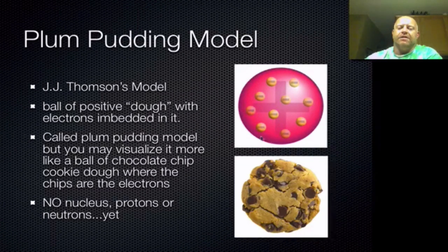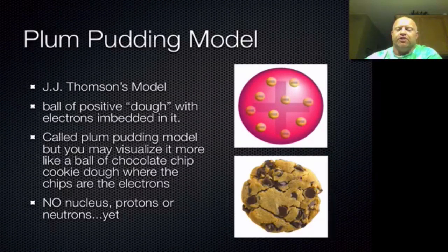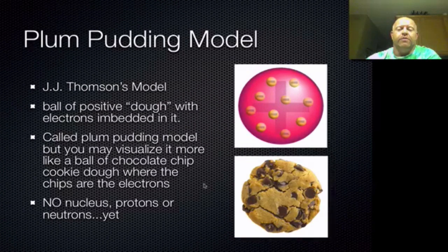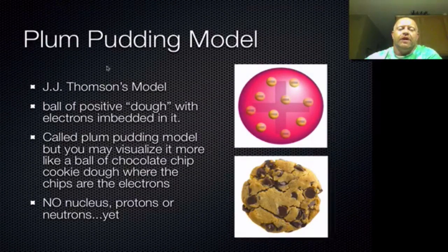Embedded inside that positive dough are all these negatively charged particles, which we call the electrons. I visualize it more like a chocolate chip cookie — the cookie part is like your positive dough and the chips are like your negative electrons. In his model, there is no nucleus, no protons, and no neutrons yet, because none of these parts of the atom had been discovered. So really, all he added was that this positively charged mass had negatively charged particles embedded in it. We call that the plum pudding model.